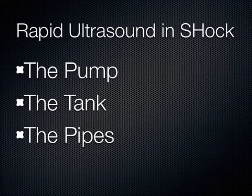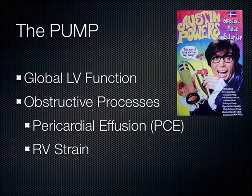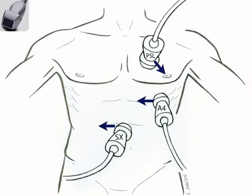We'll start with the pump — and now you'll always remember the Austin Powers movie when evaluating somebody in shock. The pump involves evaluation of global LV function and any obstructive processes, specifically a pericardial effusion or pericardial tamponade, and RV strain in the setting of pulmonary embolism. The three probe positions to evaluate the pump are the parasternal long, the apical four-chamber, and the sub-xiphoid.